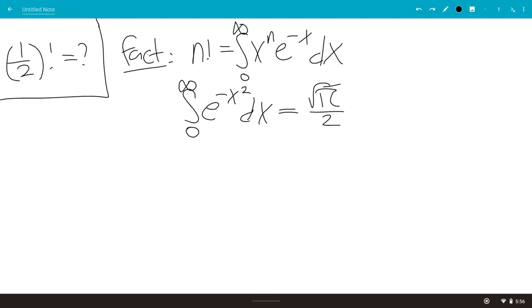And we also know from my previous video that the integral of zero to infinity of e to the minus x squared dx is square root of pi over 2.